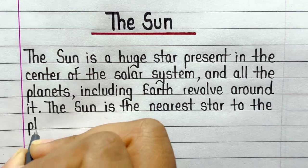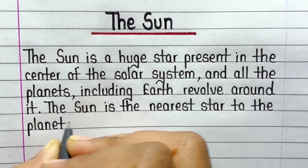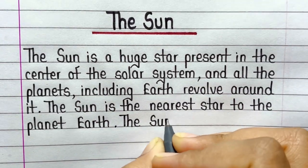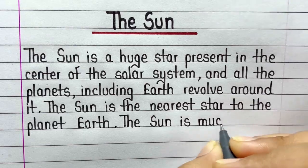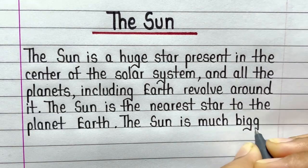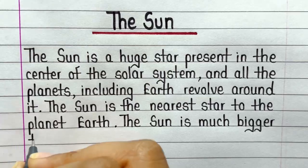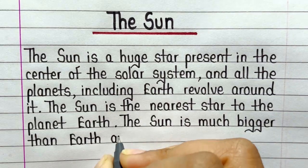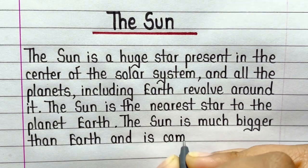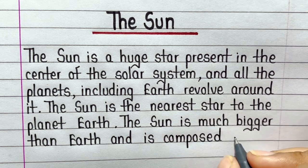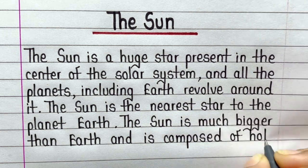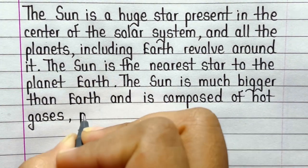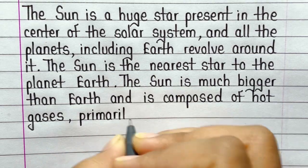The Sun is a huge star present in the center of the solar system, and all the planets, including Earth, revolve around it. The Sun is the nearest star to the planet Earth.